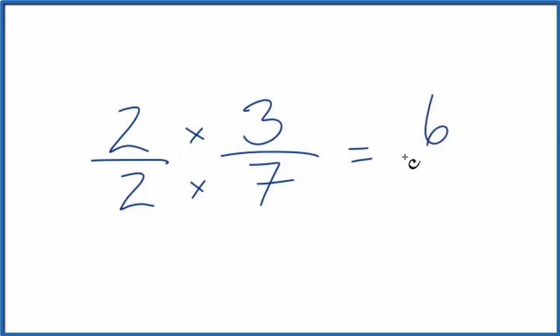2 times 3 is 6. 2 times 7, that's 14. So 6 fourteenths, that's an equivalent fraction for 3 sevenths. They equal the same value, but they have different numerators and denominators.